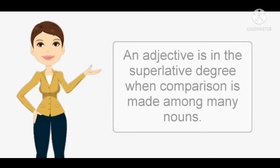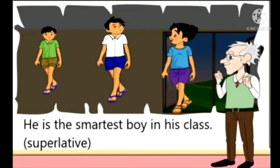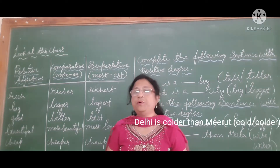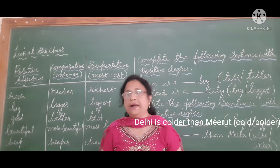Now let us learn about the superlative degree. An adjective is in the superlative degree when comparison is made among many nouns. In superlative, we compare with many nouns or pronouns. Example: he is the smartest boy in his class. This boy is compared with all the boys in the class, and he is the smartest among all of them. We have now learnt positive degree, comparative degree, and superlative degree.